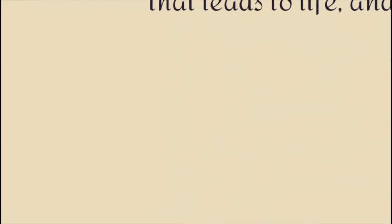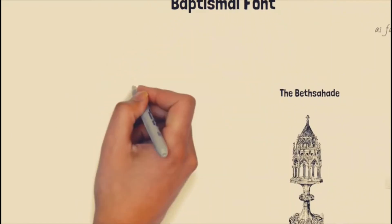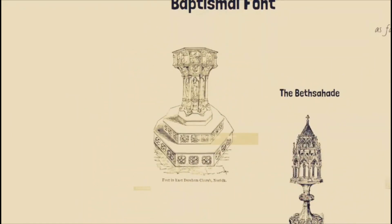The Baptismal Font is located just outside the sanctuary on the right side. It is placed close to the altar to highlight the deep bond between the Holy Eucharist and the Sacrament of Baptism. This represents the womb of the church — where Christians are born. Its proximity to the altar suggests that Christians born at the Baptismal Font are to grow in holiness by receiving the food from the altar, which is the Holy Eucharist.